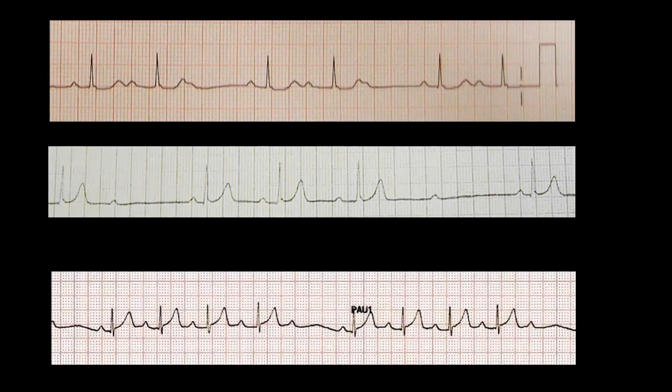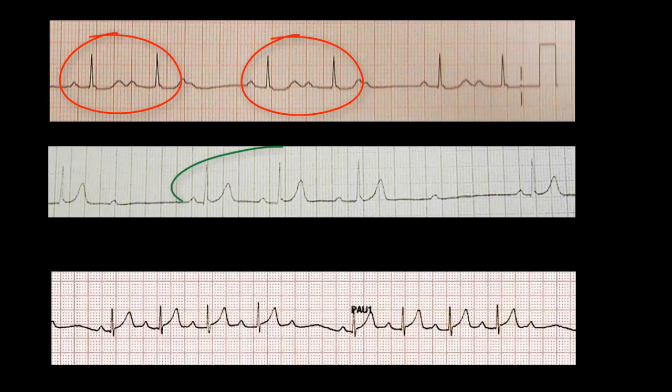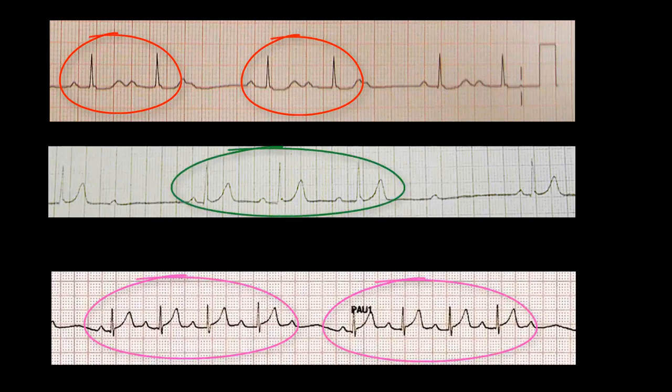If you think about it, this gives the appearance on a rhythm strip of grouping of the QRS complexes — groups of two, three, or four. Looking at the rhythm strip, it's a pretty good trick to pick up quickly that it may be Wenckebach.